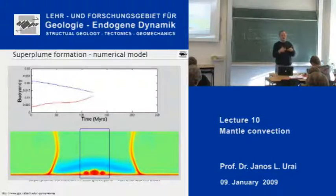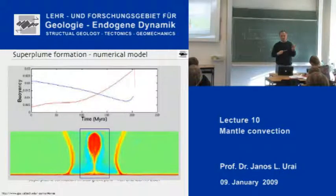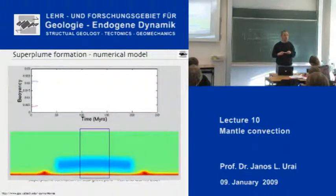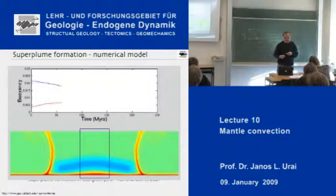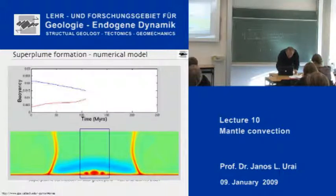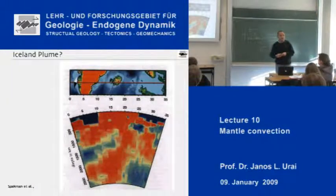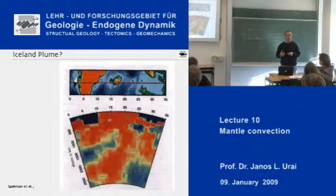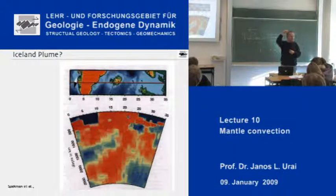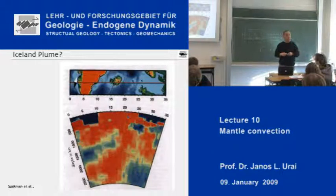Many scientists think that plumes are everywhere, but in fact there is a quite important and active discussion about whether mantle plumes really exist. The direct evidence for mantle plumes would come from tomography studies, but these studies are not yet accepted by everybody. It has not been convincingly shown that mantle plumes coming from the base of the mantle go all the way to the top of the lithosphere, and there are other explanations for generating magma and volcanoes on top of the lithosphere.